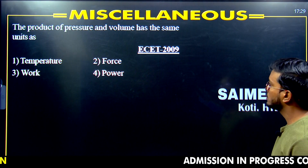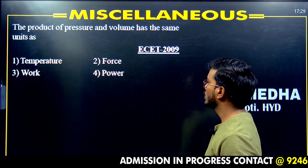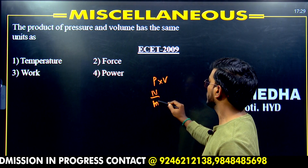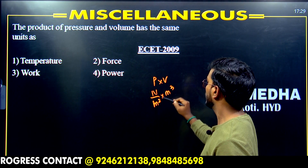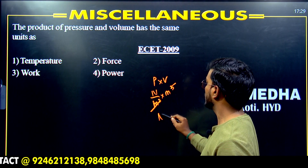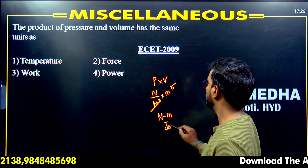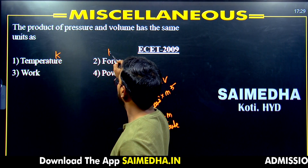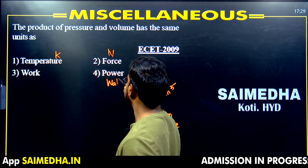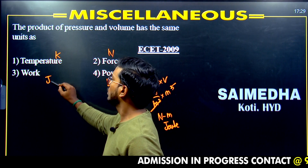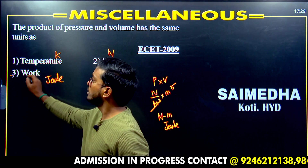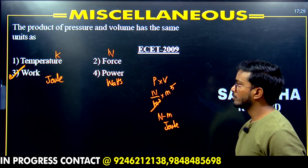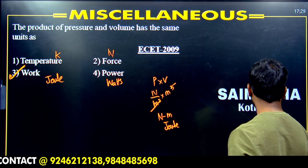The next question: the product of pressure and volume. Pressure is newton per meter squared, volume is meter cubed. Meter squared cancels, giving newton meter, which is joule. The unit of work is joule, so the correct answer is joule — that is work, option number three.